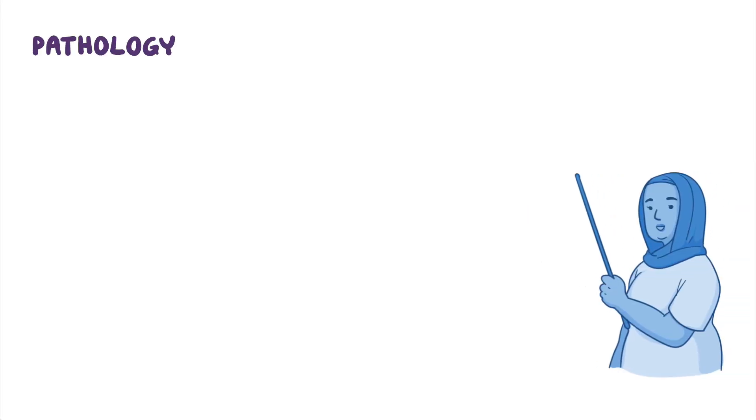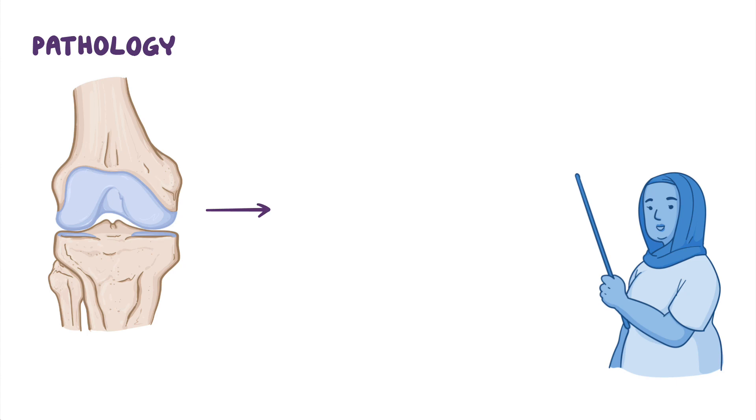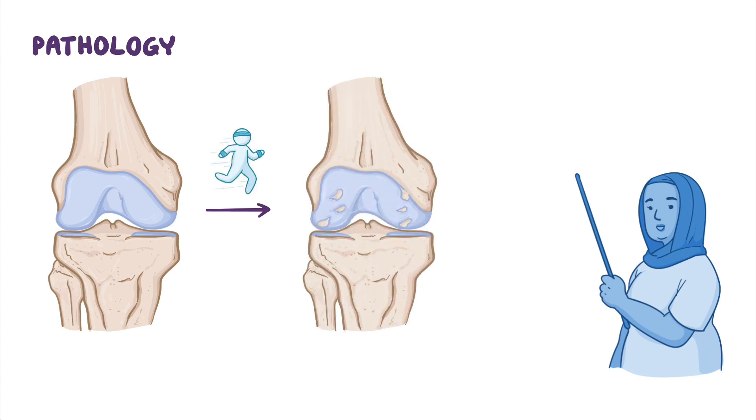Now, the pathology of osteoarthritis occurs when the articular cartilage wears away from repetitive stress, becoming weaker and losing elasticity. Since cartilage has limited repair capacity, the areas of maximal stress start developing fibrillations, which are cracks or clefts on what used to be a smooth articular surface.